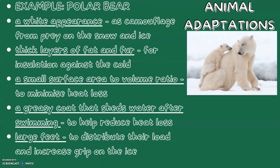For animal adaptations, the classic example is the polar bear. They have a white appearance, which acts as camouflage from prey on the snow and ice. They have a thick layer of fat and fur for insulation against the cold, and a small surface area to volume ratio to minimise heat loss. They have a greasy coat that sheds water after swimming to help reduce heat loss, and large feet which help to distribute their load and increase grip on the ice.